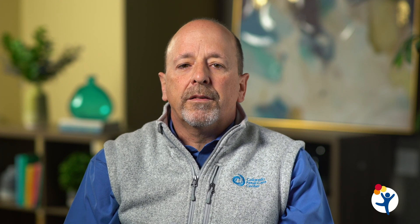IUGR is important to identify in pregnancy because it carries risks to both the mother and the fetus. Maternal risks include increased testing, which results in lost time from work and other activities, and delivery by cesarean section for fetal heart rate abnormalities. The fetus is at risk for low blood oxygen levels and low blood pH, fetal heart rate abnormalities before and during labor, and stillbirth.